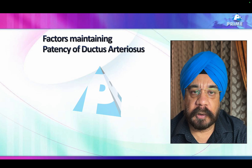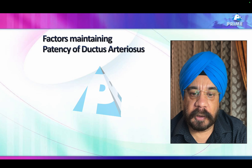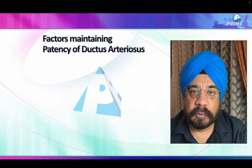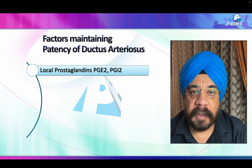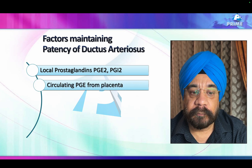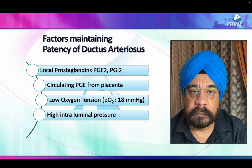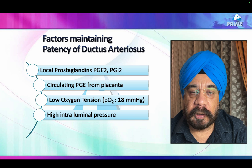Why is the ductus patent during the prenatal period and why does it close after birth? Prostaglandins produced by the placenta in large quantities keep the ductus open. Since the fetus has no functional lungs to degrade these prostaglandins, they circulate in abundance in fetal circulation. After birth, oxygen tension increases, leading to ductal constriction. Luminal pressures also increase after birth, causing closure of the ductus.